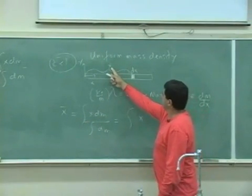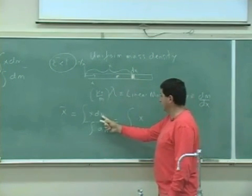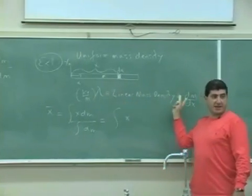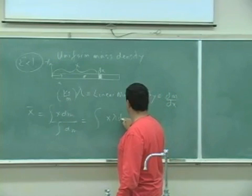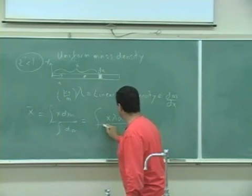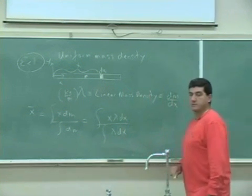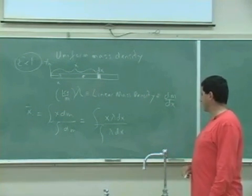So basically what I'm doing is I'm saying that x times the mass of that little piece dm, but dm is equal to what? Lambda dx by my definition, right? So you have integral x lambda dx over integral lambda dx.